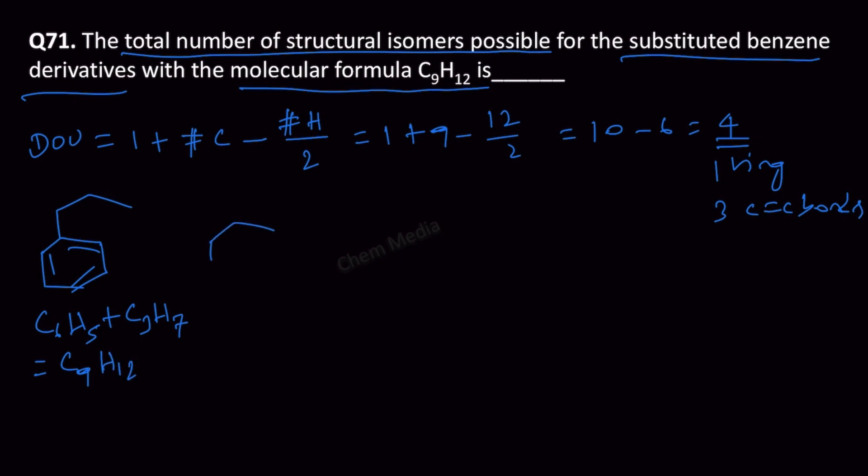We can also write another isomer that is putting an isopropyl group. So that is isomer 2, and then let us put an ethyl group and a methyl group. So that is 1 isomer.